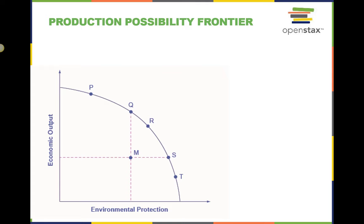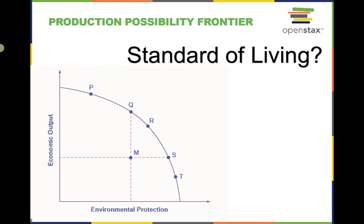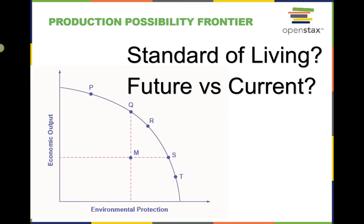Each society will have to weigh its own values and decide whether it prefers a choice like P, with more economic output and less environmental protection, or a choice like T, with more environmental protection and less economic output. Either way, the society tries to avoid producing at points like M, because that means the economy is not producing at full capacity. Typically, the production possibilities frontier answers a couple of questions for us. First, what is the standard of living in a society? This is usually answered by the total output of the economy, but the quality of the environment can also impact the standard of living. Second, is a society balancing their present consumption and its investment in the future? The economy and the environment can work in harmony to answer this question as well.